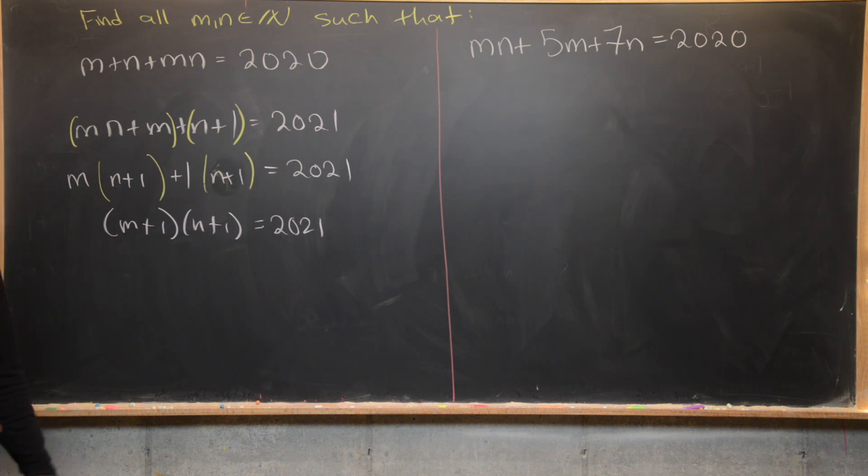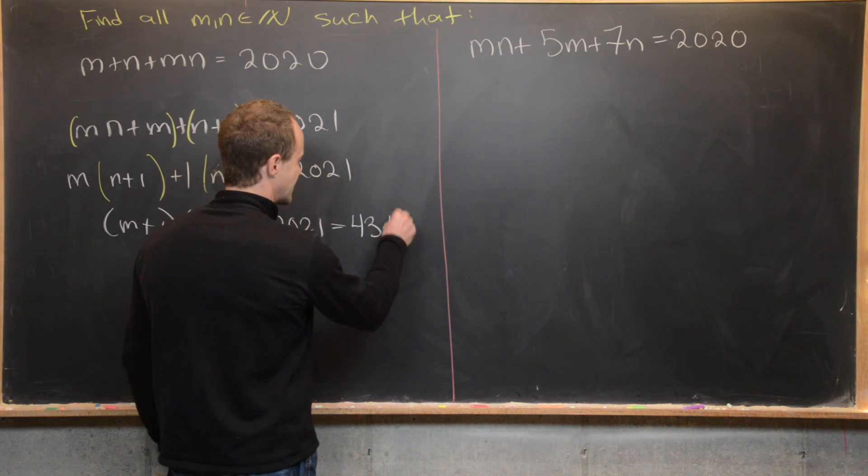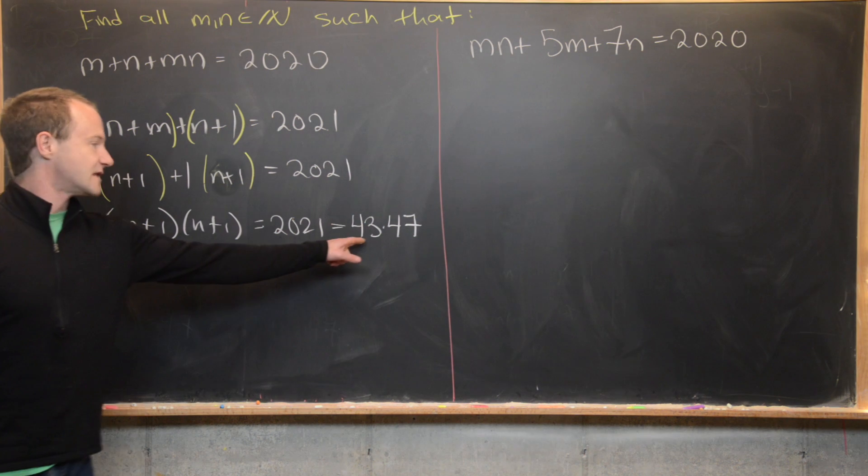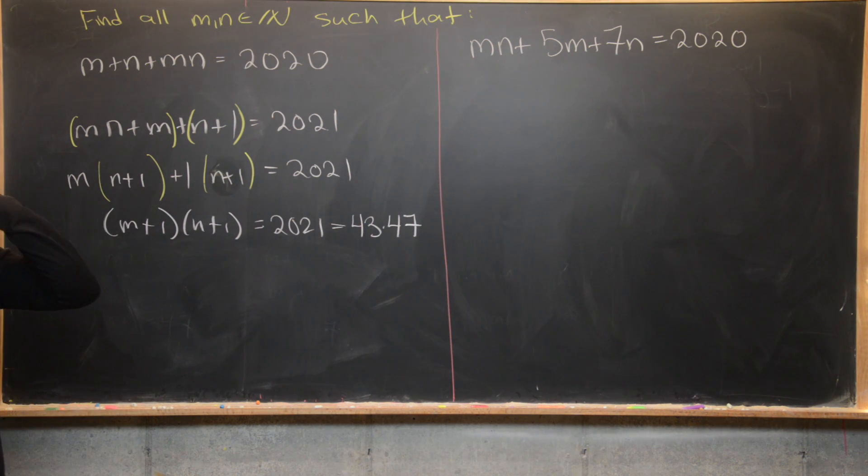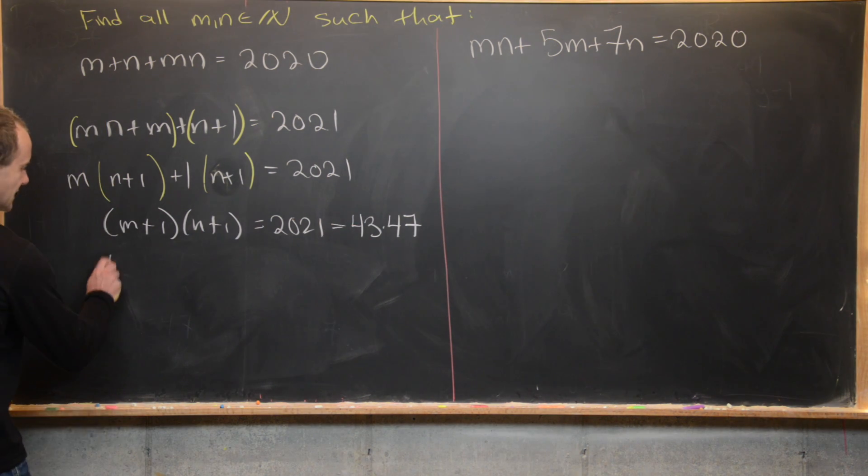And I'll let you guys play around with it, but it factors as the product of 2 primes, 43 times 47. Like I said, you can check that. But now since those are primes, that means that's the only way to factor this 2021. So we can match this m plus 1 and this n plus 1 with 43 or 47.